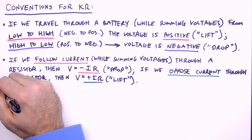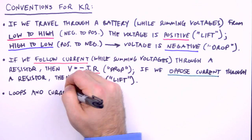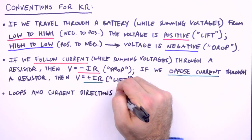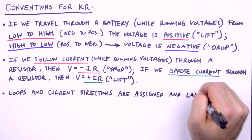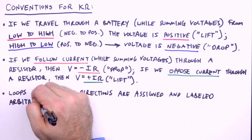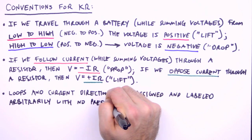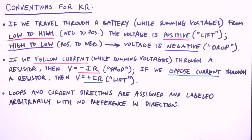Now a lot has been said about the directions of currents and loops. How are these directions initially decided? This is the best part. The directions of loops and currents are assigned and labeled arbitrarily, with absolutely no preference in direction. So long as the circuit is correctly analyzed using Kirchhoff's rules, the actual direction of positive charge flow will be revealed in our results. So it's kind of like choose your own adventure in physics land. Physics land!